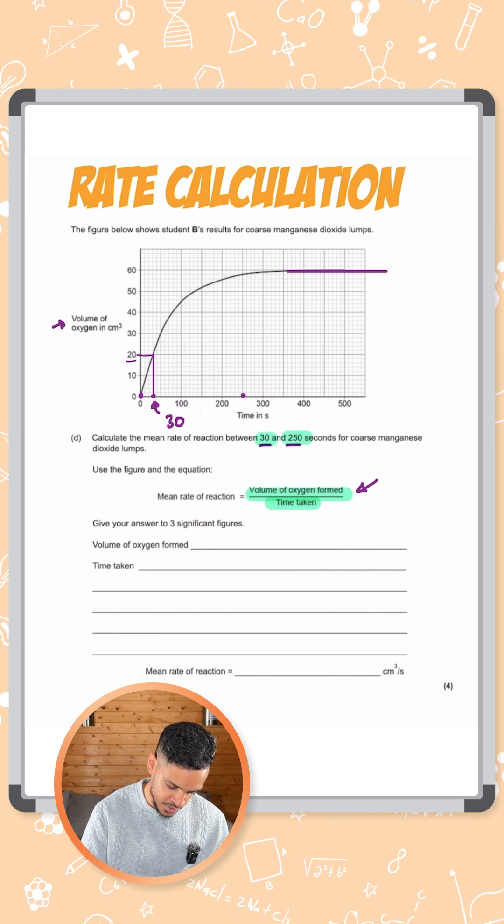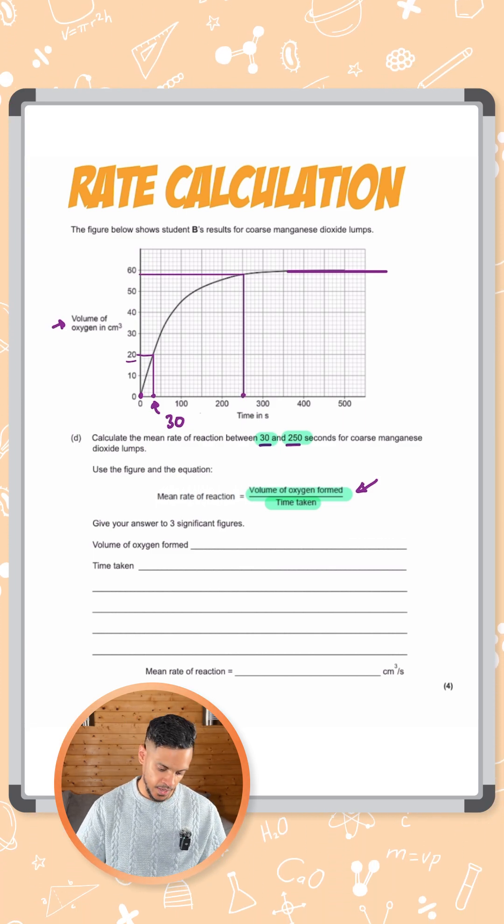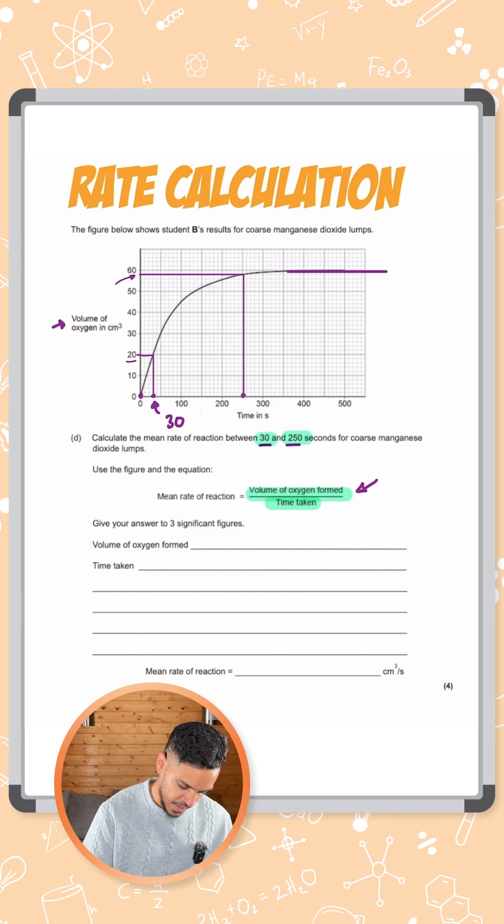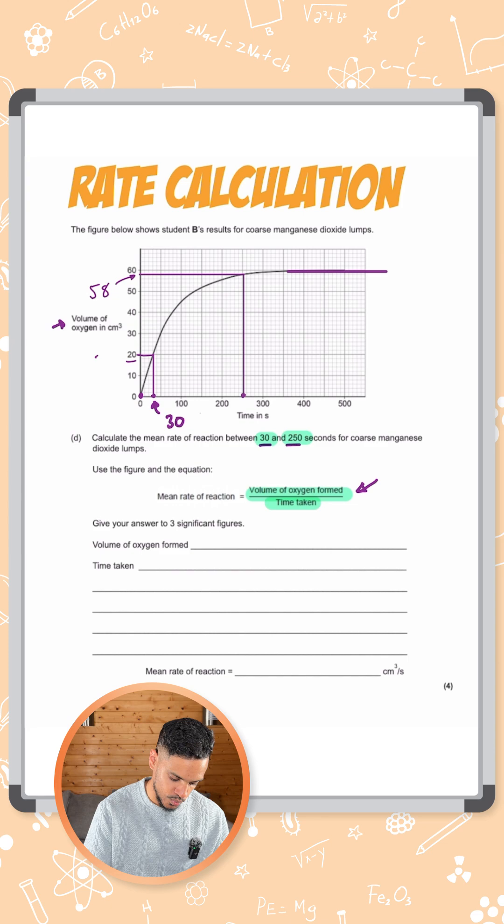Let's do the same for 250 here which is around here. We're going to go up and across just like before and you can read the graph here as 1 square below 60. So that's around 58. So we've got 58 and 20 here.